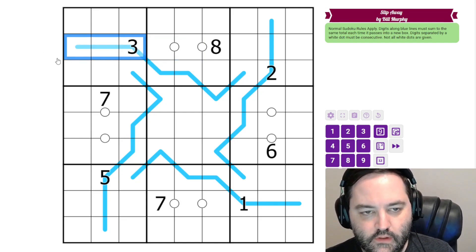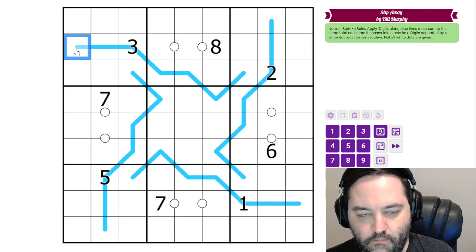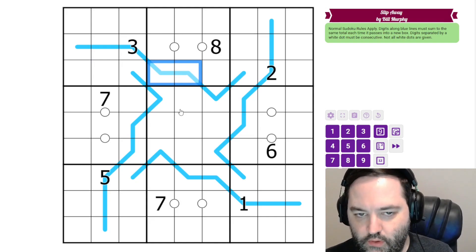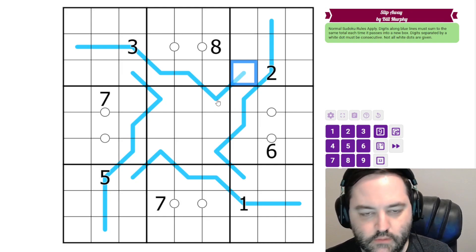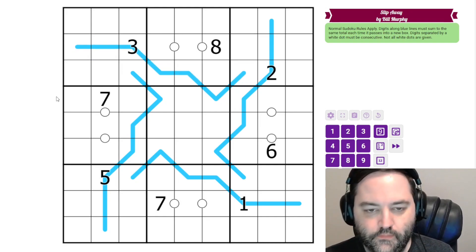And then the region sum lines tell us that in each box that the line passes through, the sum is the same. So these three digits on this blue line have the same sum as these two digits, which have the same sum as this one digit and this one digit. So this is the sum of these two and these three. And those are the rules.